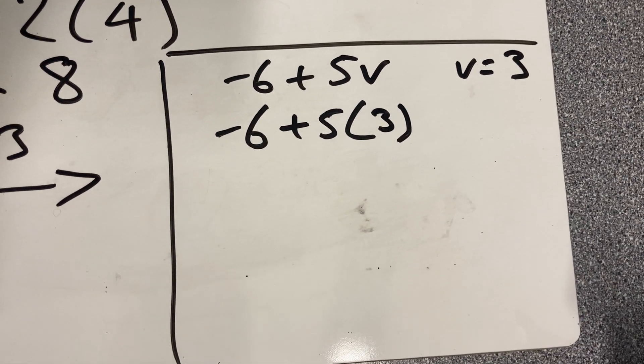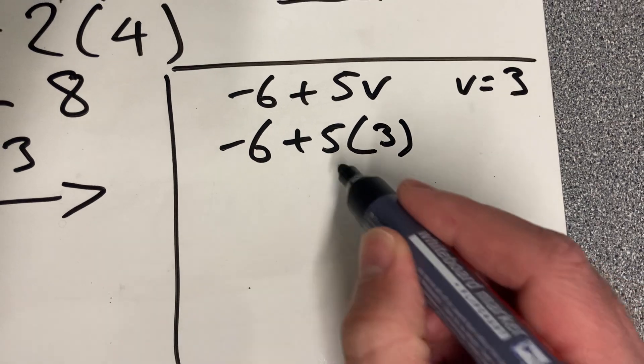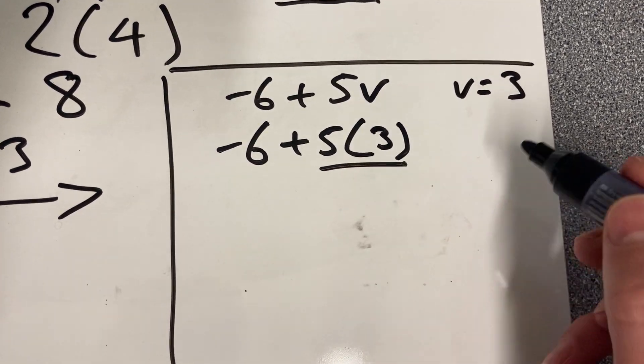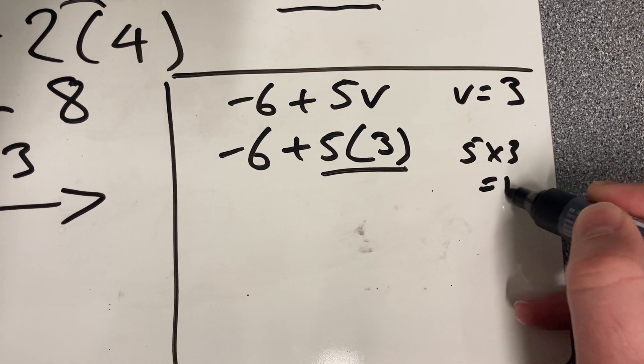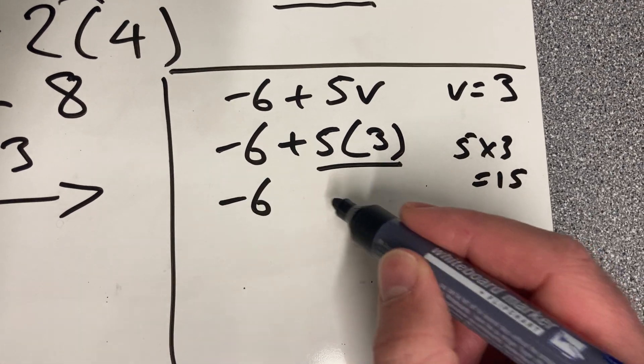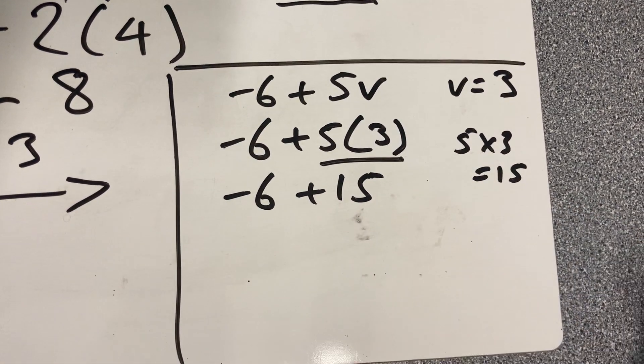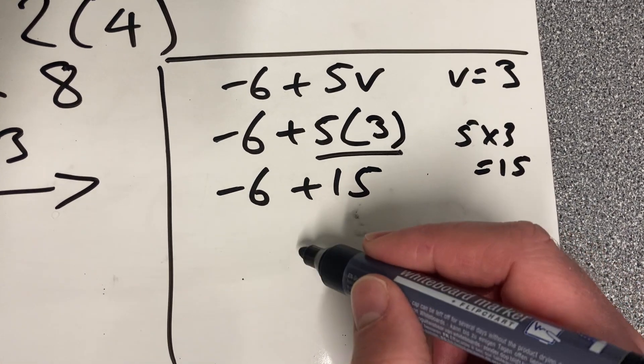What do I do next? 5 times 3, which is 15. So minus 6 plus 15. And what's that? 9. We get 9.